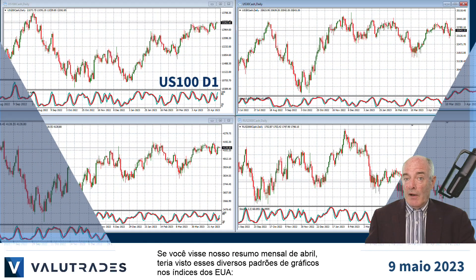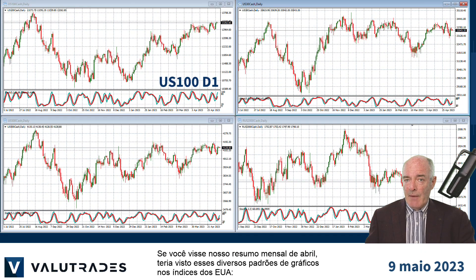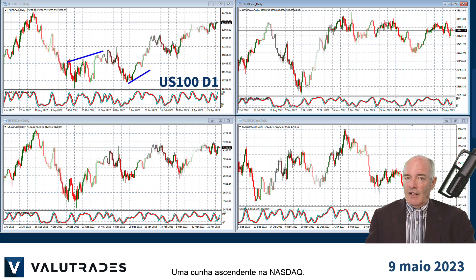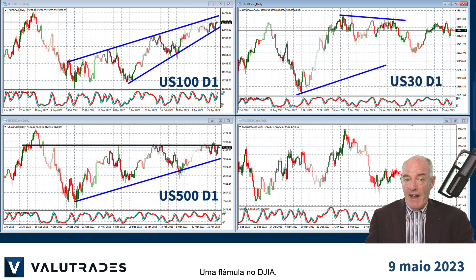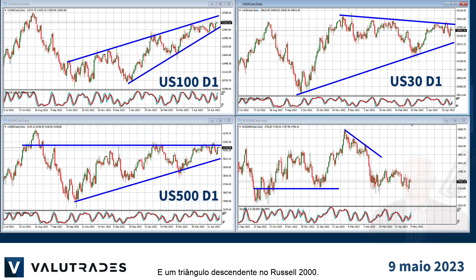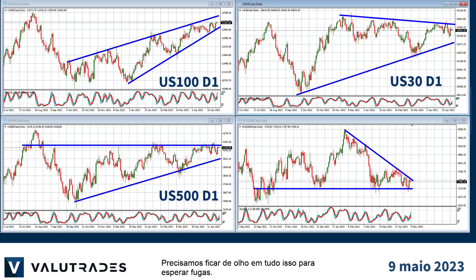If you saw our monthly summary from April you would have seen these diverse chart patterns on the US indices: a rising wedge on the NASDAQ, an ascending triangle on the S&P 500, a pennant on the Dow Jones Industrial Average, and a descending triangle on the Russell 2000. We need to keep an eye on all of these to expect breakouts.